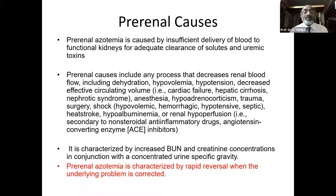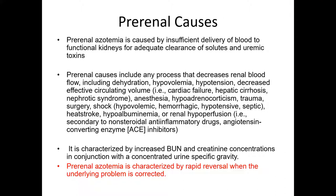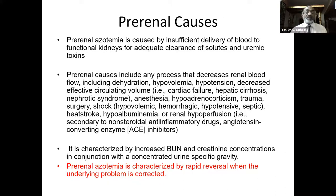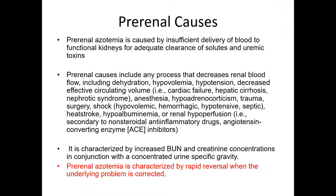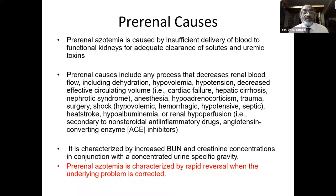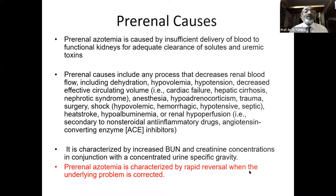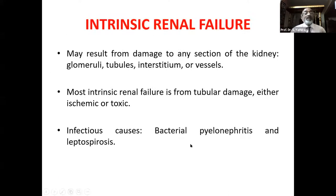Pre-renal azotemia is characterized by increased BUN and creatinine concentrations in conjunction with concentrated urine specific gravity. Pre-renal azotemia is also characterized by rapid reversal when the underlying problem is corrected — this is equally important. If we can correct the underlying cause, azotemia can be totally reversed.